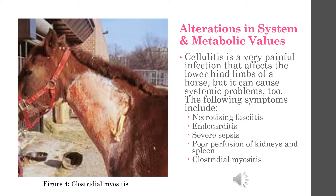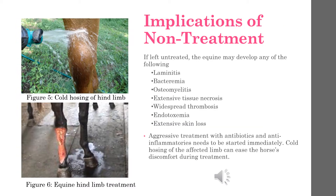Cellulitis may also cause alterations in systemic and metabolic values. It can cause necrotizing fasciitis, endocarditis, severe sepsis, poor perfusion of the kidney and spleen, as well as rhabdomyolysis, which is featured in the picture. Left untreated, the equine may develop any of the following: laminitis, bacteremia, osteomyelitis, or extensive tissue necrosis.